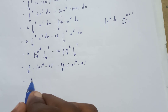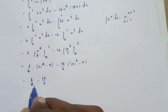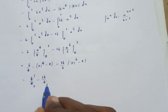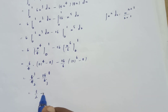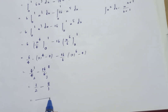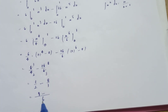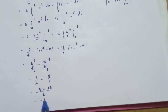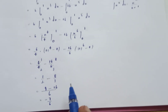This gives 6 by 4 minus 16 by 6, which simplifies to 3 by 2 minus 8 by 3. Computing: 9 by 6 minus 16 by 6 equals minus 7 by 6. The final answer is minus 7 by 6.